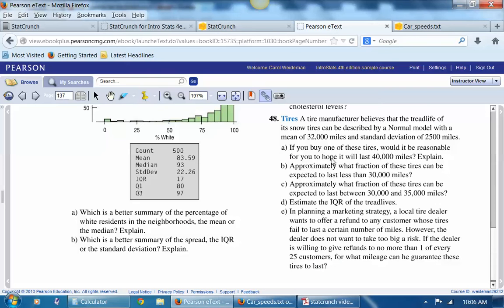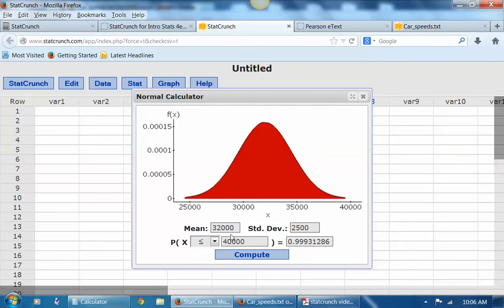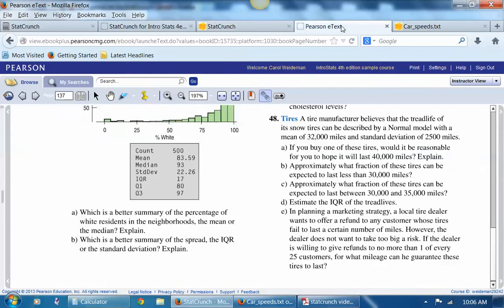Let's see what else they ask us. What fraction of tires can be expected to last less than 30,000? So let's go ahead and compute. We want less than, and this time we want 30,000 rather than 40,000. So about 21% of the tires would be expected to last less than 20,000 miles.